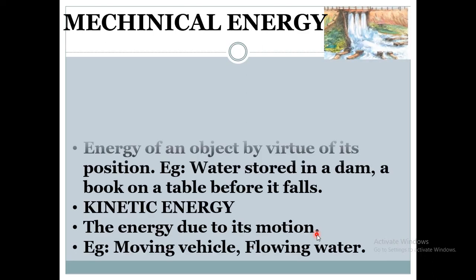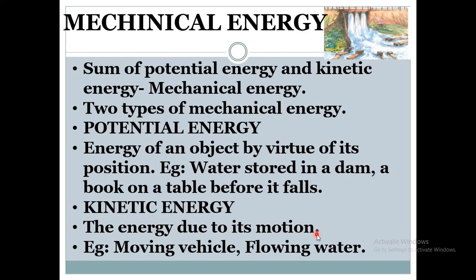Next is mechanical energy. The sum of potential energy and kinetic energy is called mechanical energy. There are two types of mechanical energy: potential energy and kinetic energy. Potential energy is the energy possessed by an object due to its position. For example, when water is stored in a dam, it has potential energy. A book resting on a table also possesses potential energy.